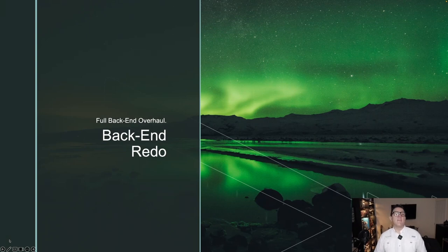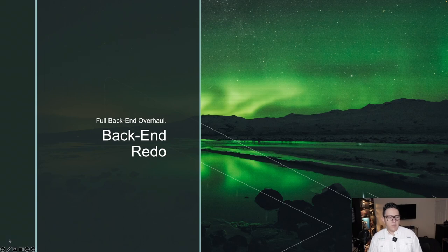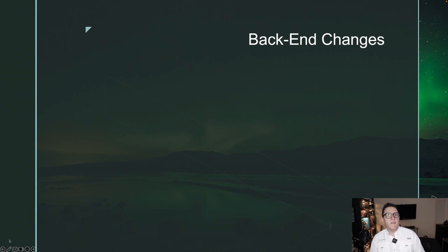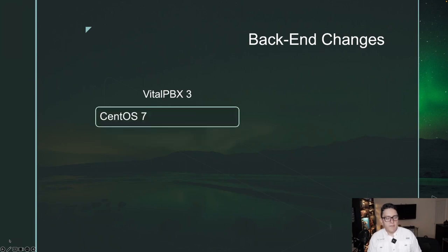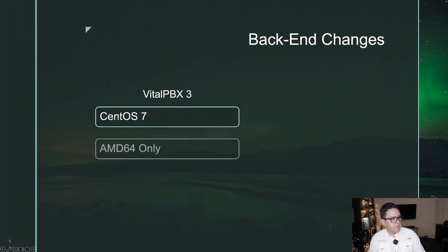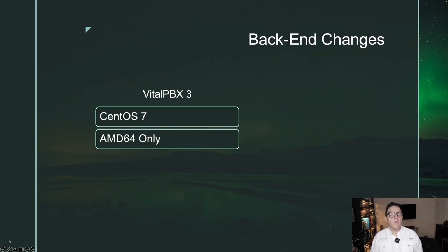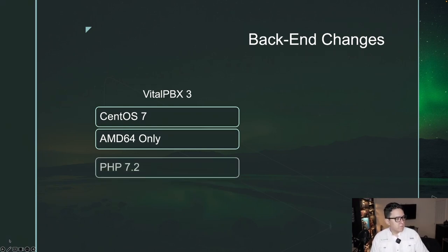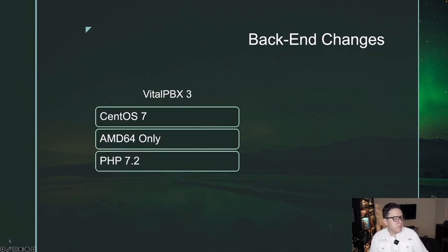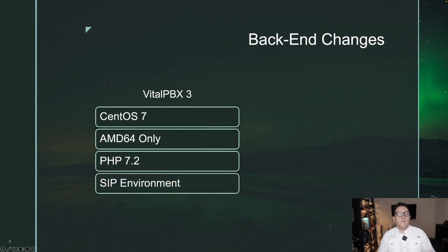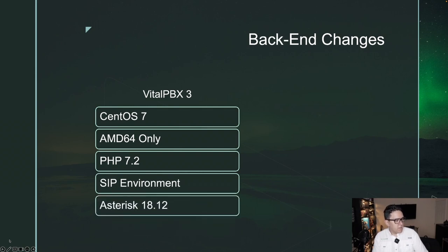The first and biggest thing VitalPBX 4 has is a full back-end overhaul. With version 3, we had CentOS 7 64-bit as our base operating system, AMD64 only architecture, PHP 7.2, mostly a SIP environment, and the latest Asterisk version was Asterisk 18.12.